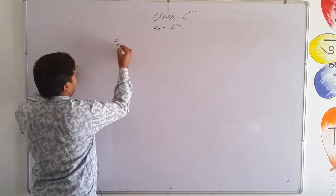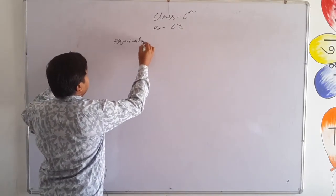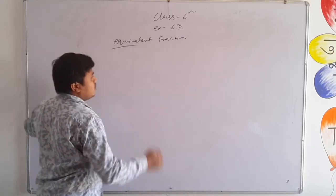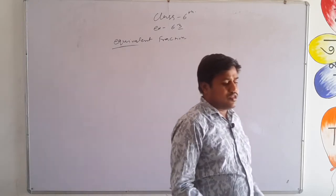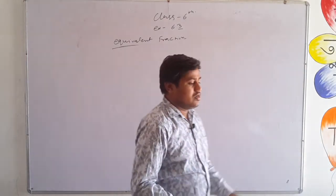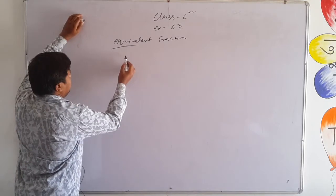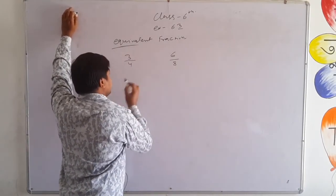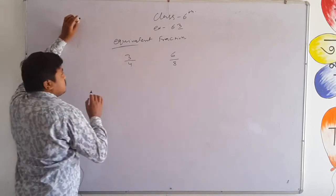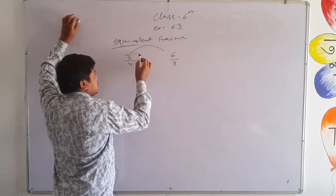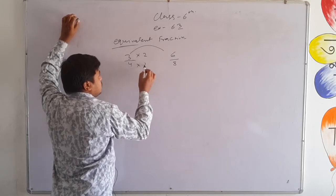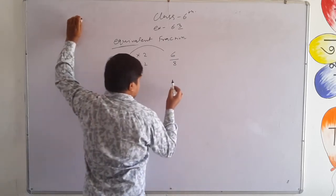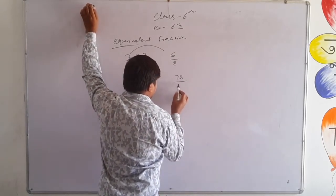What are equivalent fractions? Equal fractions — the meaning is that both have the same value, just written with a slight change. For example, 3 upon 4 and 6 upon 8 — both fractions are equal, because 3 times 2 is 6 and 4 times 2 is 8. Similarly, 7 upon 14 and 28 upon 56 are also the same.